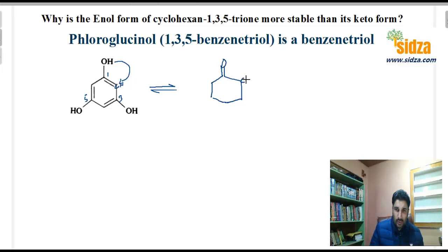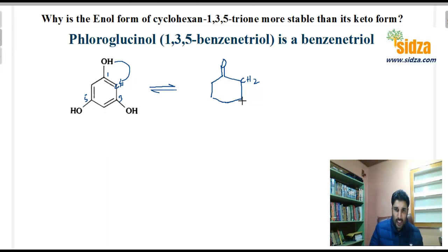What you get is a molecule where we now have a C=O (carbonyl), and the carbon that was CH becomes CH2. The double bond that was there is now a single bond. The same thing happens at the other two hydroxyl groups — hydrogen shifts to those carbons, giving C=O groups and CH2 groups at those positions too.